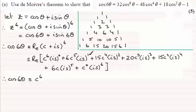For this term, this is i¹ so that's going to be imaginary. This one's going to be i² so that's going to be -1, so you're going to get -15c⁴s².